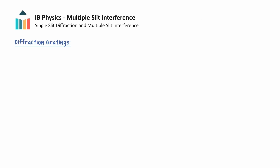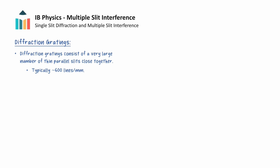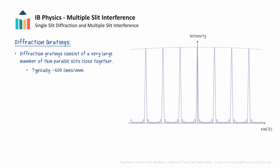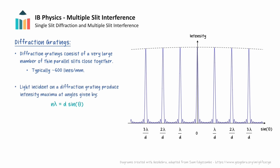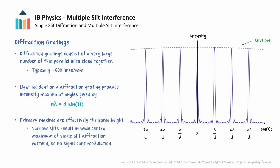The most common application of multiple slit interference is in diffraction gratings. A diffraction grating consists of a very large number of thin parallel slits that are very close together, typically around 600 slits per millimetre, referred to as 600 lines per millimetre. The angles at which interference maxima occur are still determined using d sin theta equals n lambda. The maxima are much more intense, and effectively all the same height because the slits are so narrow that the central maximum of the single slit pattern is very wide and does not modulate the pattern. White light through a diffraction grating splits into its component colours, and gratings can identify specific wavelengths, for example in analysing emission spectra to identify elements.